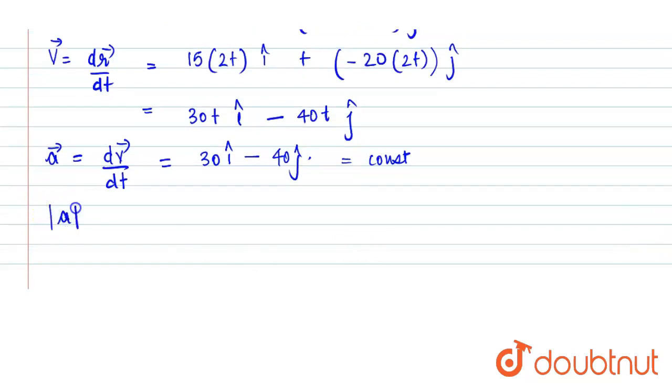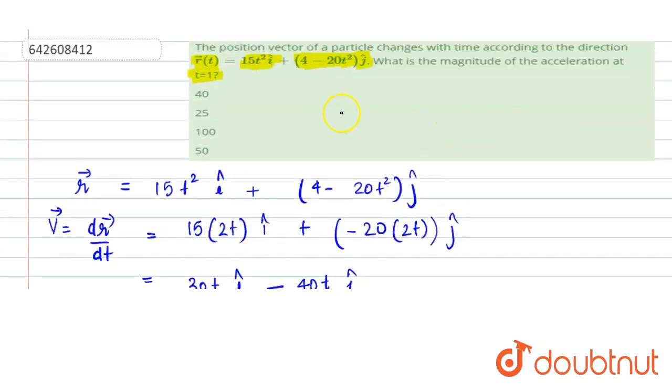Now we have to find the magnitude of a at time t equals 1 second. Since a is constant, value of acceleration is constant, so at all times its magnitude will remain same. We can find the magnitude, that would be 30 square plus 40 square, which is root of 900 plus 1600, which is root of 2500, or we can say it is 50. So magnitude of acceleration at time t equals 1 second or at any other time will be 50.